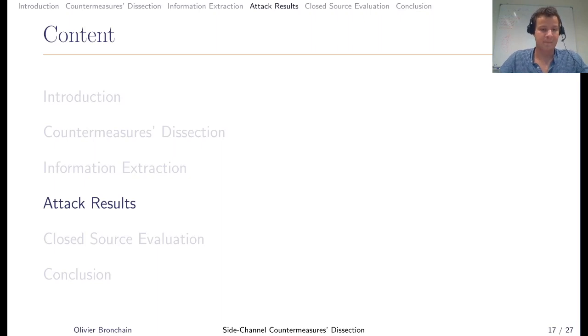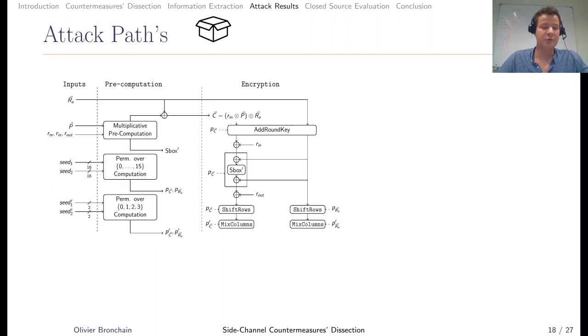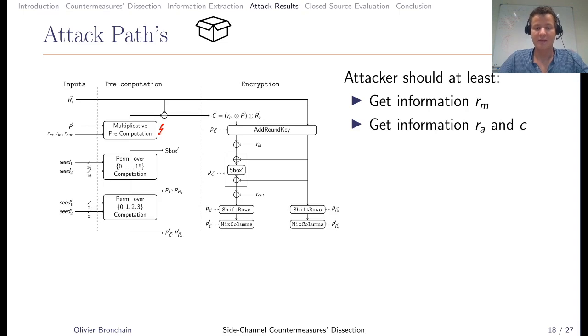Now that we know how to extract information, we can do the attack. The first phase is to know where to attack. The adversary or evaluator has to get information about the multiplicative mask, and there a sweet spot is the multiplicative precomputation. Then you have to get information about the left branch and right branch within the encryption phase.